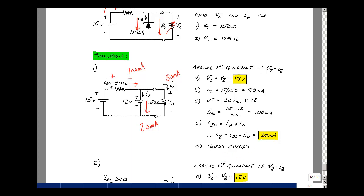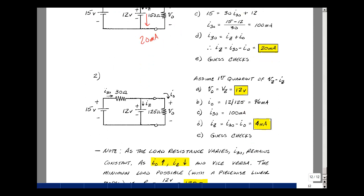Let's do the same problem again but with a different load. Now let's change the load to 125 ohms. Current has to come out of the plus terminal. We're going to guess that diode D2 is on and D1 is off. The voltage across the load is still 12 volts, but now the current is 12 divided by 125, so that's 96 milliamps.